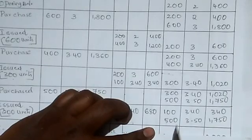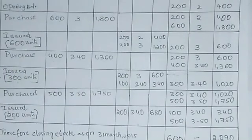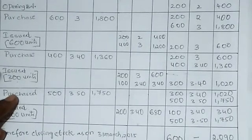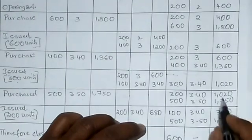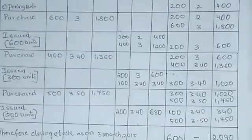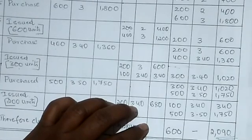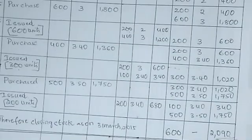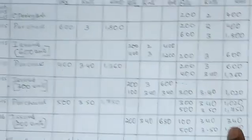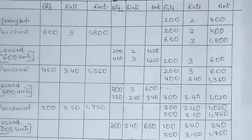Therefore, closing stock as on 31st March 2015: quantity 600 units, amount 2090 rupees. This is how we solve the FIFO method problem. Thank you.